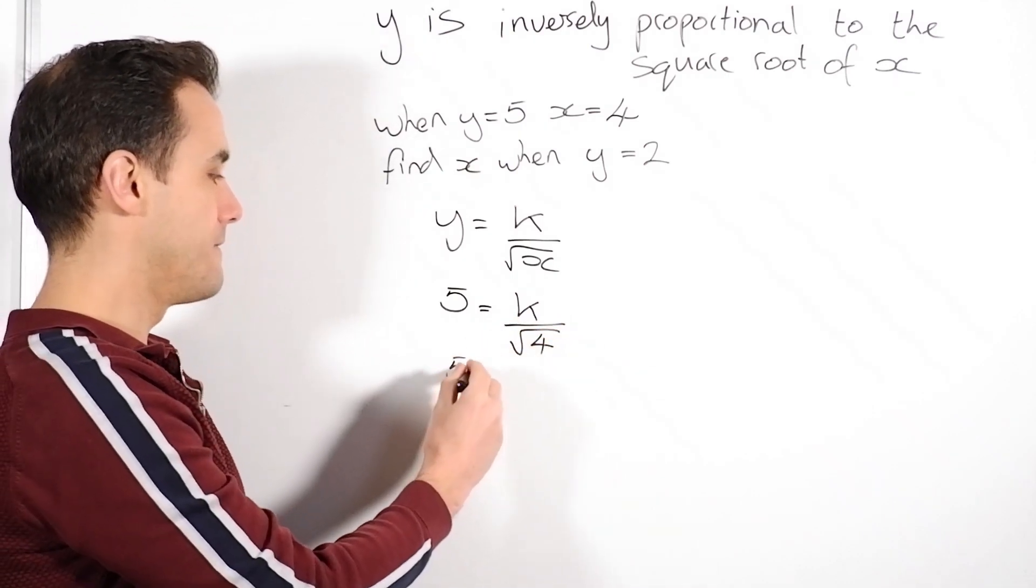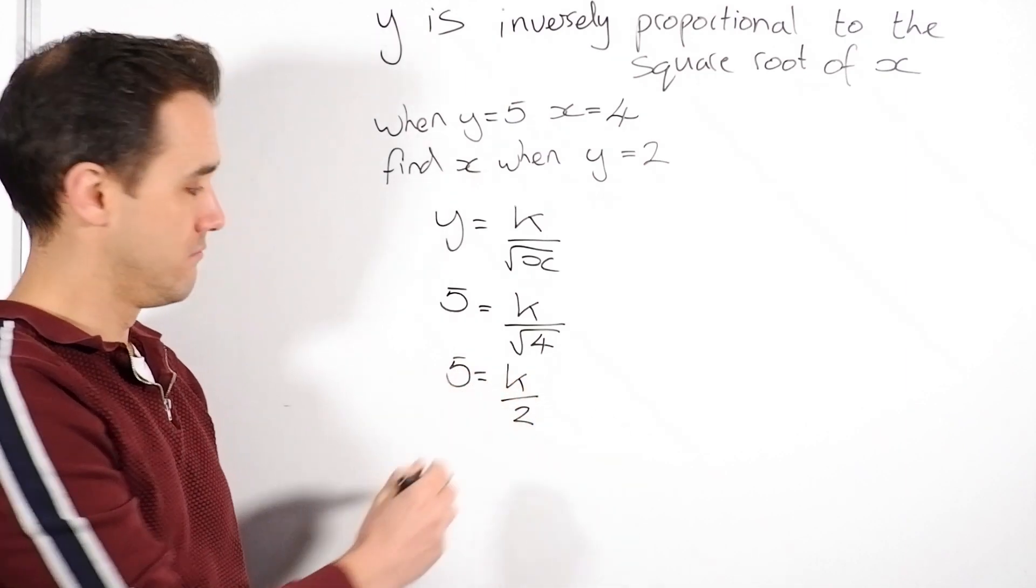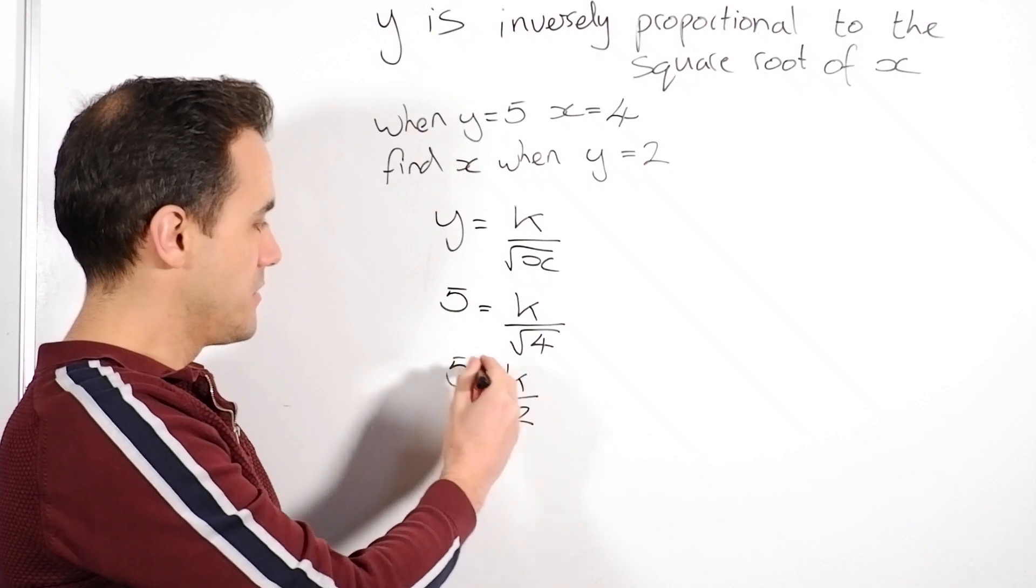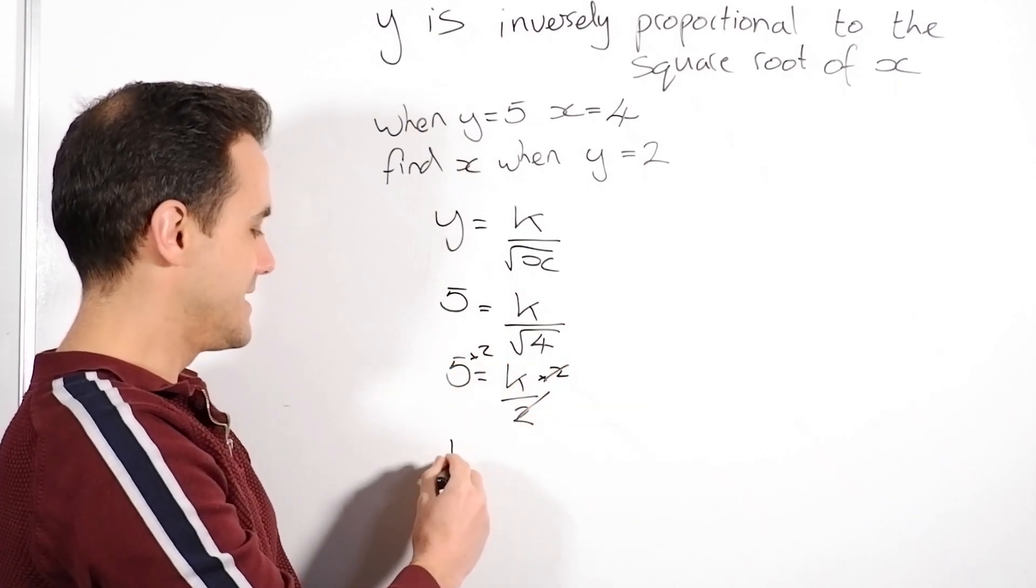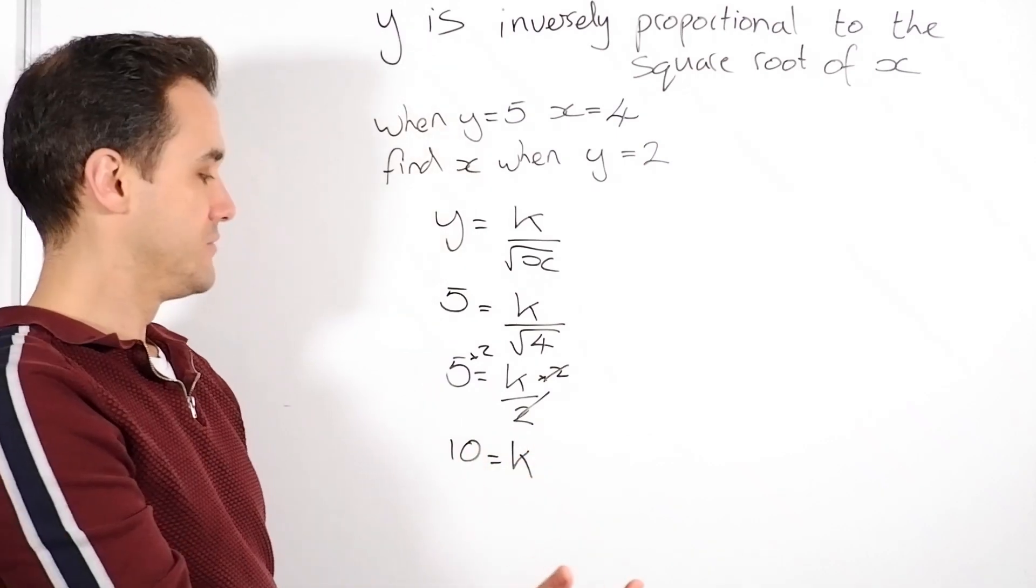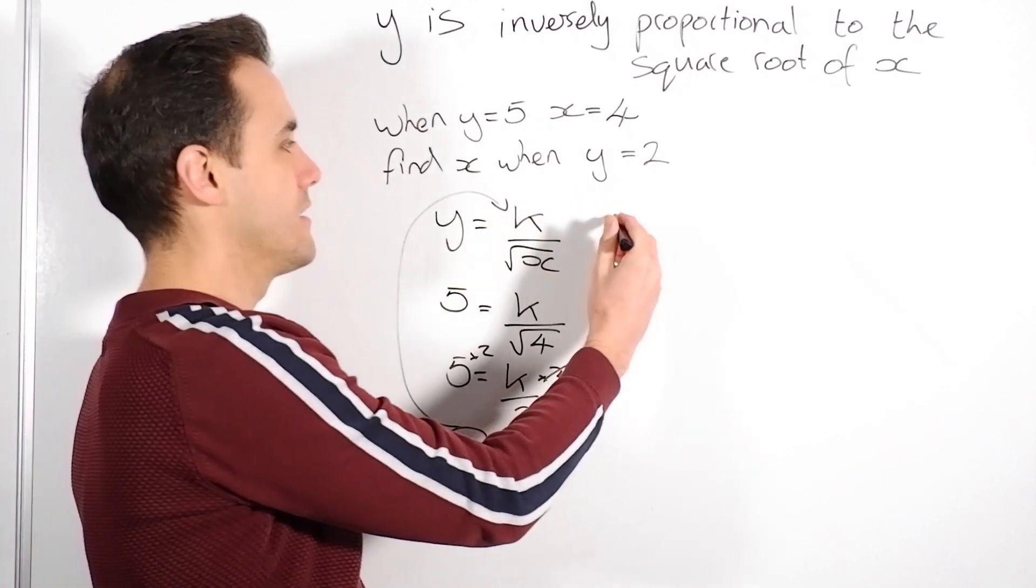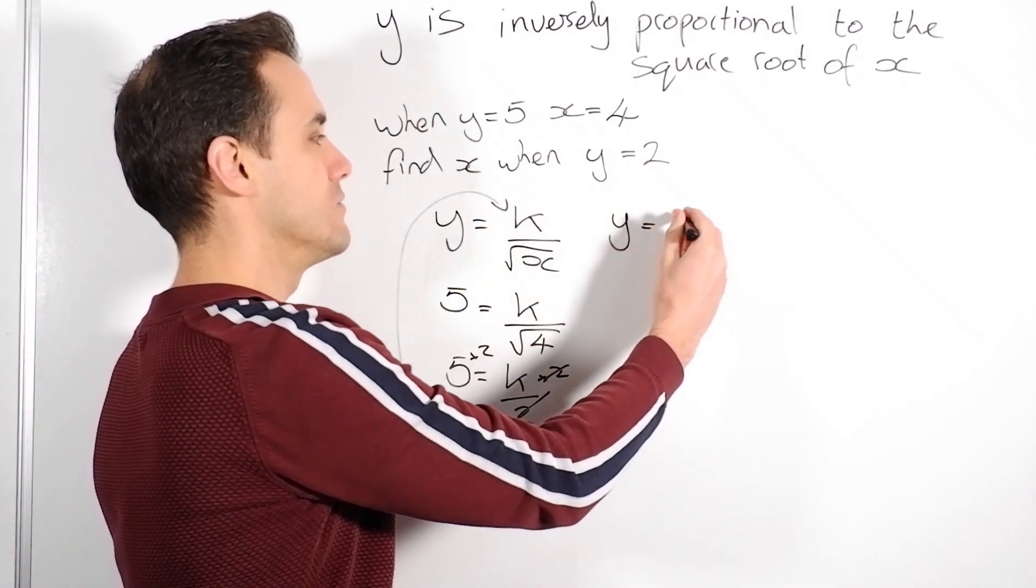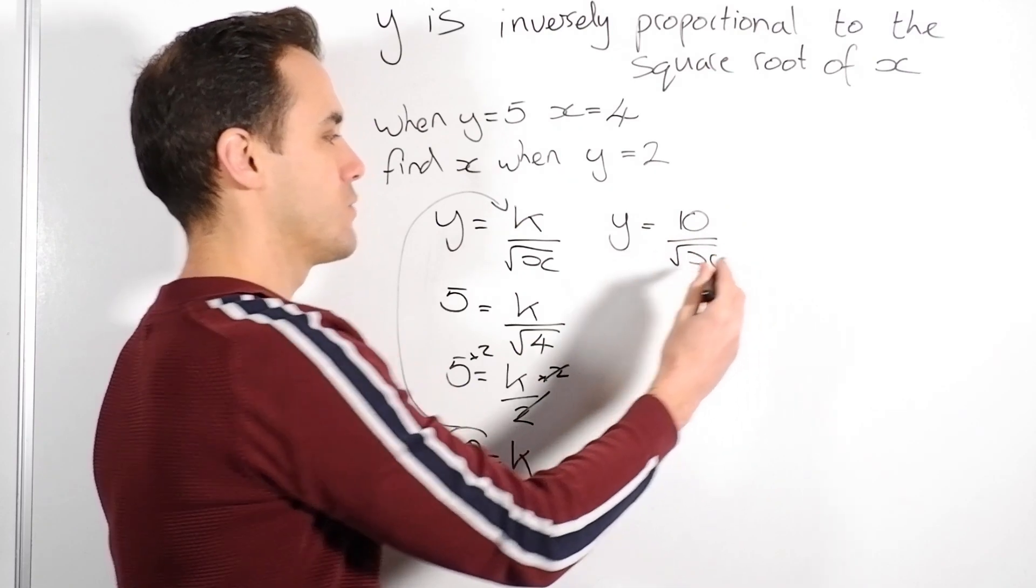So 5 equals k divided by 2. We times both sides by 2. That goes from that. And we find that 10 equals k. Done. Now again, pop that back into there. And I find that y equals 10 divided by the square root of x.